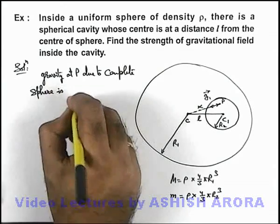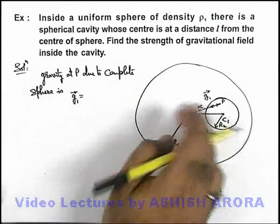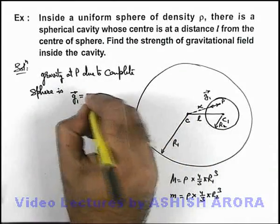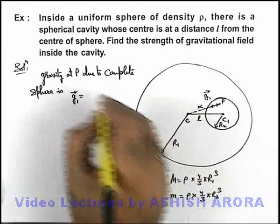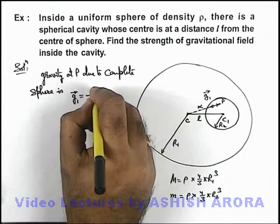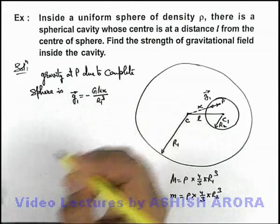This can be written as g₁ and the value will be, as it is opposite to the position vector, we can write it by the expression of gravitational field inside a solid sphere: that is -G M x / r₁³. This is the expression we use.